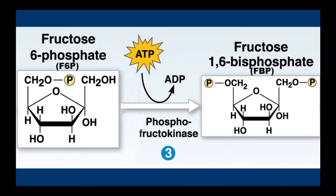In step three, fructose-6-phosphate is converted to a molecule of fructose-1,6-bisphosphate. The enzyme phosphofructokinase is involved — again a kinase enzyme — so we're going to see a second phosphorylation. We're going to further destabilize the sugar and make it more reactive by donating a phosphate onto carbon-1. Our new substrate intermediate is called fructose-1,6-bisphosphate, or FBP.